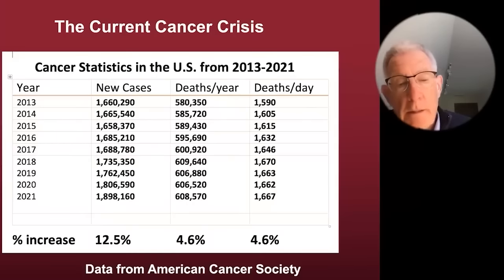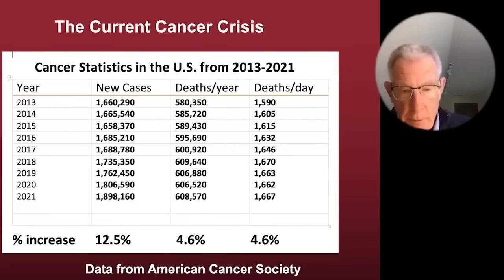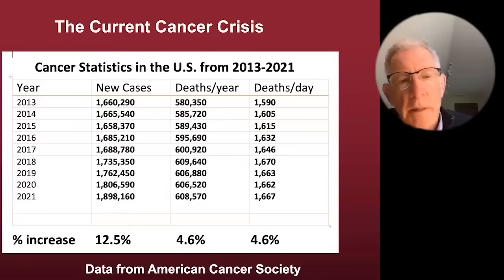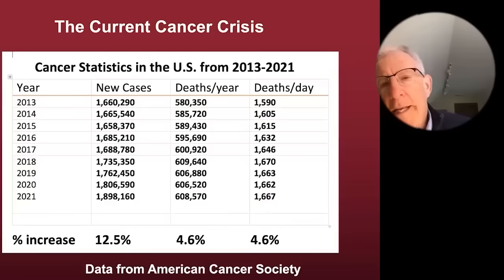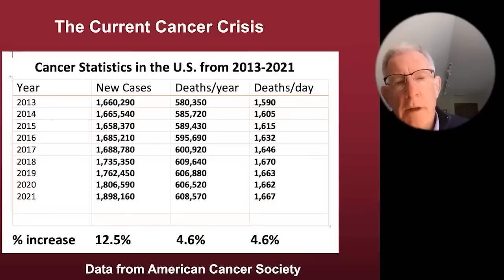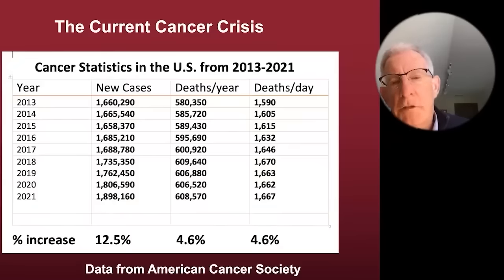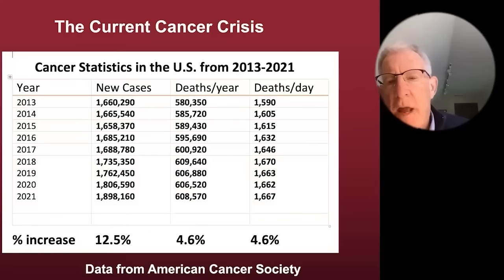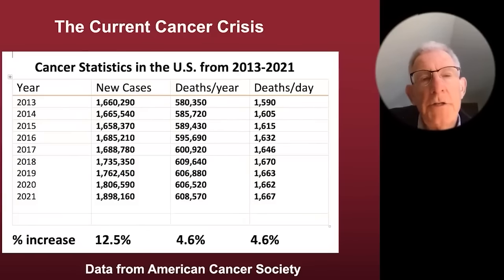There's a 12% increase in new cases and about a 4.6% increase in deaths per year, which is parallel to the approximate increase in U.S. population size over the same period. The bottom line is we're not making any major drop — it's stagnating. You hear about all this great progress on television, but when you look at the statistics, we don't see major drops. It's just a continual gradual increase year in and year out.